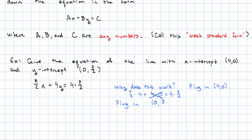If I plug in 0, 7 halves, then I have 7 halves times 0 plus 4 times 7 halves is 4 times 7 halves. Again, this term is 0 and these are exactly the same multiplication, so that's obviously true.